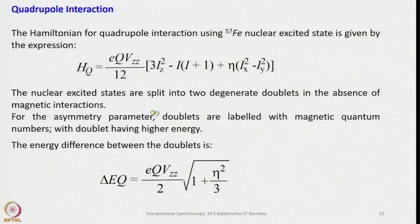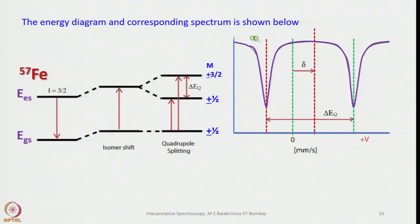Now let us look at quadrupole interaction. The Hamiltonian for quadrupole interaction, using again iron-57, is given by the relevant equation. The nuclear excited states are split into two degenerate doublets in the absence of magnetic interactions. The doublets are labeled with magnetic quantum numbers, with the higher-energy doublet distinguished accordingly. The energy difference between the doublets is given by ΔE_Q = (eQV_zz/2) × √(1 + η²/3). The corresponding energy diagram and spectrum show the isomer shift and the quadrupole splitting, with two lines visible — one at positive velocity and one at negative velocity.